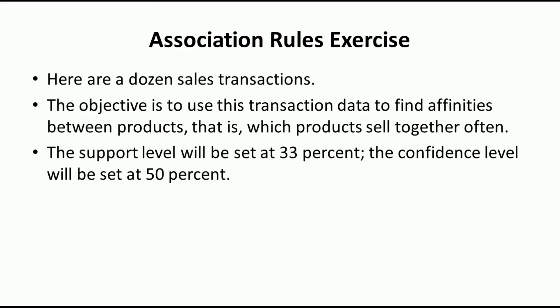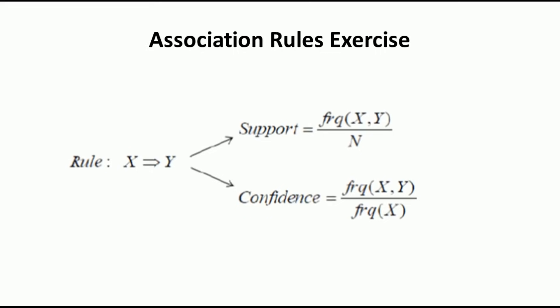How do we calculate support? For association rule X → Y, the support is equivalent to frequency of XY divided by N, the total number of transactions. The confidence of rule X → Y is equivalent to frequency of XY divided by frequency of X.